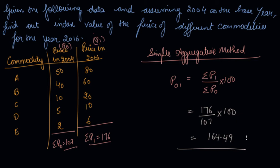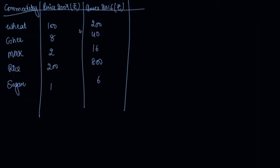The base year is the year of reference from which we want to measure the extent of change in the current year. Now let's see the price relative method. You are given the commodities, the price of the base year, and the price of the current year, and you are asked to find out the price index for the current year using the price relative method.